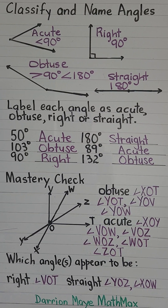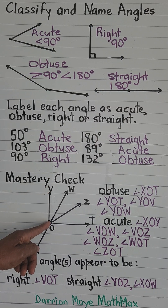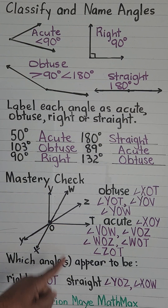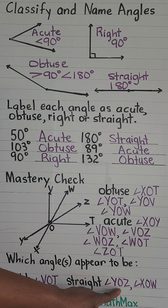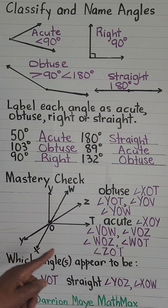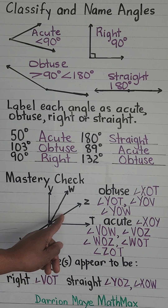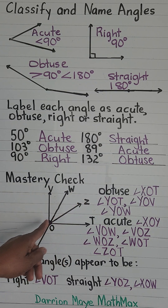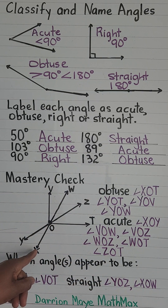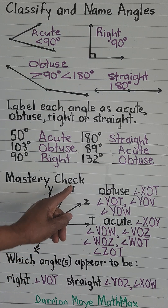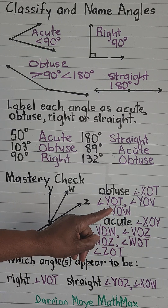Okay, let's check. We have our right angle: V-O-T — that's the only right angle. For straight angles, did you say Y-O-Z? Or X-O-W? Both Y-O-Z and X-O-W are straight angles — two straight angles. Now let's look at obtuse.